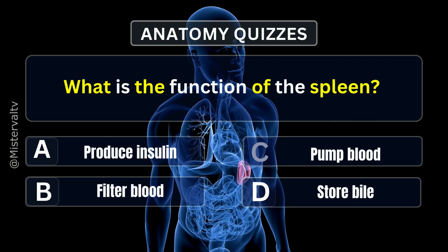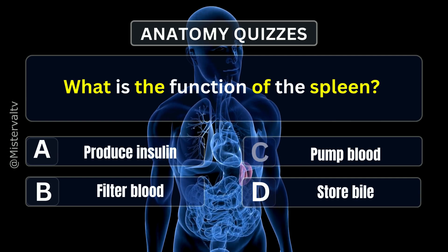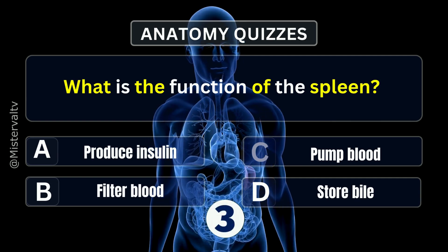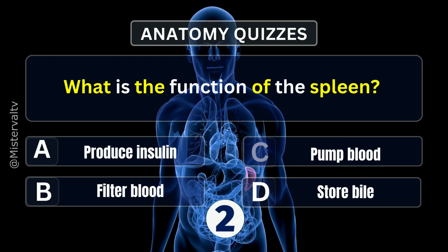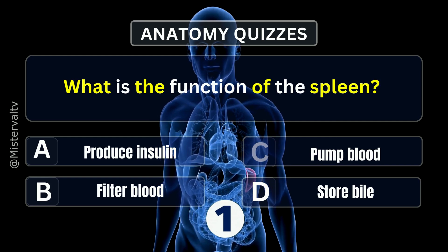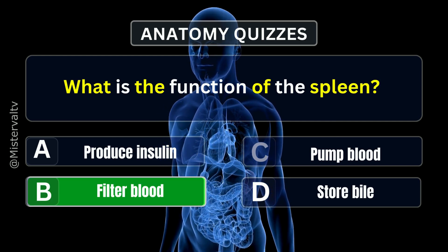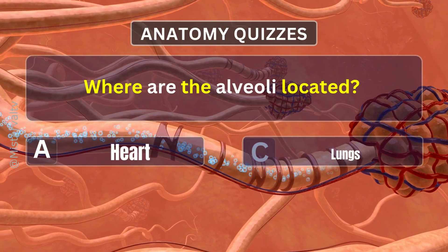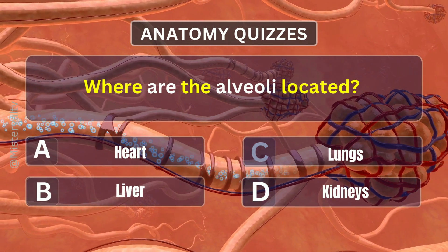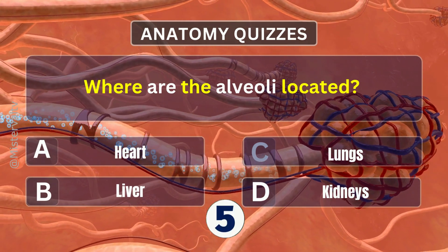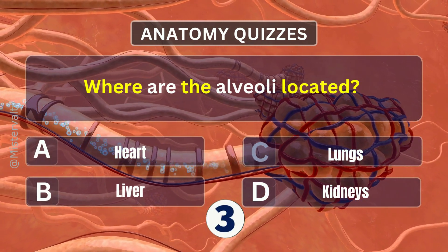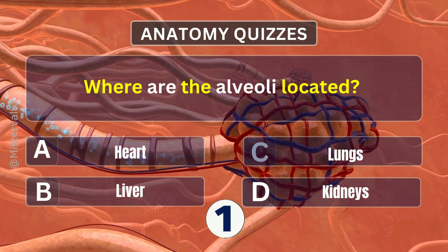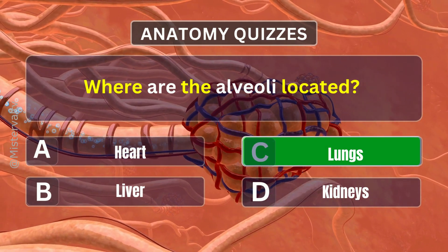What is the function of the spleen? Answer. B. Filter blood. Where are the alveoli located? Answer. C. Lungs.